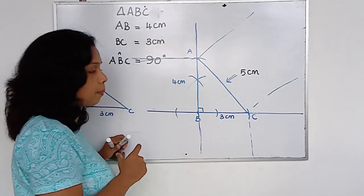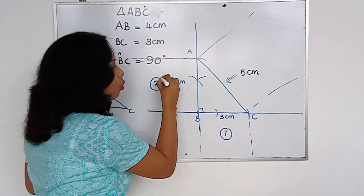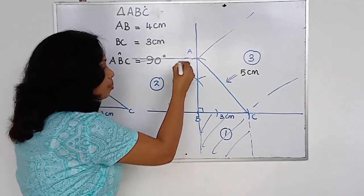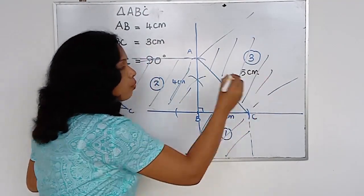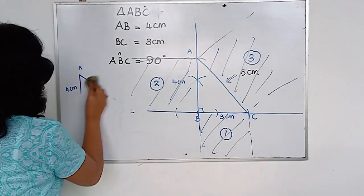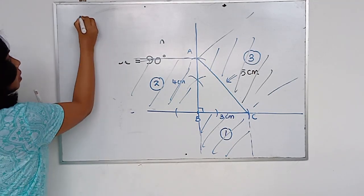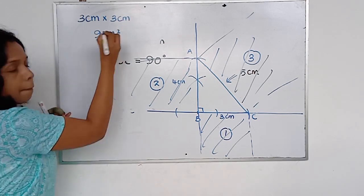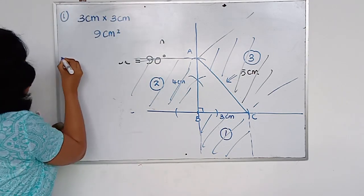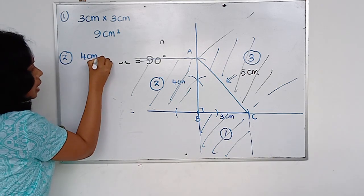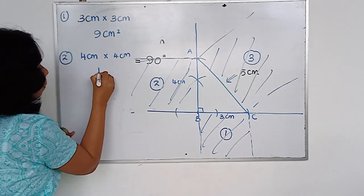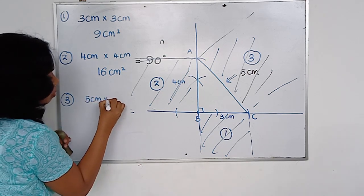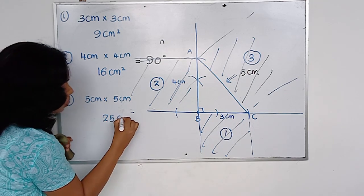Now you want to find the area of each square. The area of the first square: 3 centimetres times 3 centimetres — it is 9 square centimetres. The area of the second square: 4 centimetres times 4 centimetres — it is 16 square centimetres. And the third one: 5 centimetres times 5 centimetres — it is 25 square centimetres.